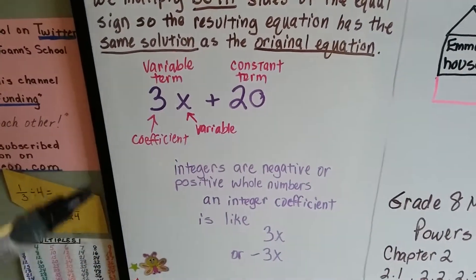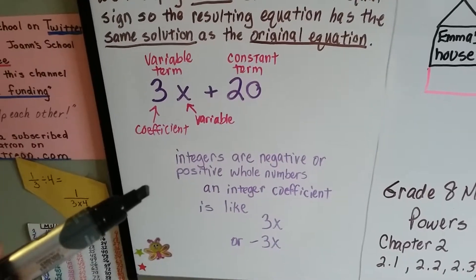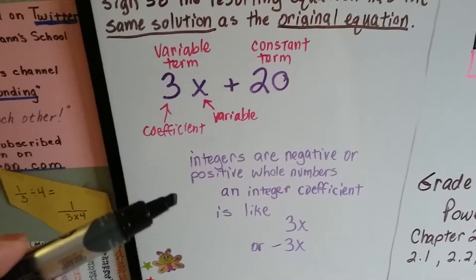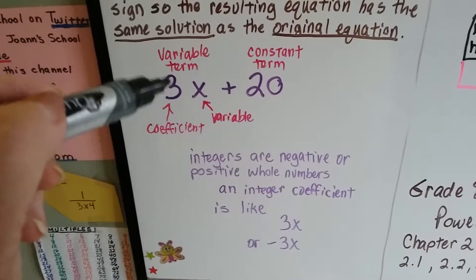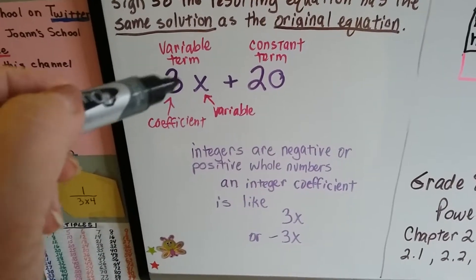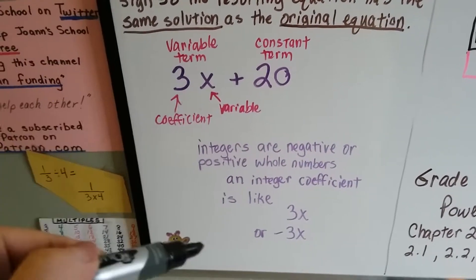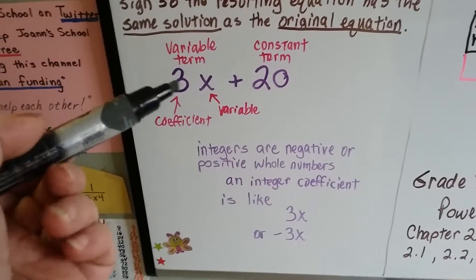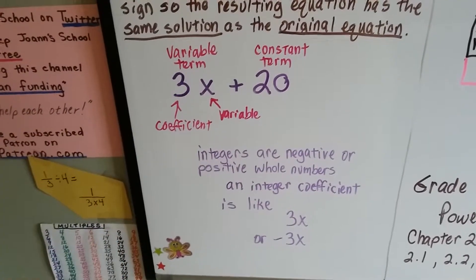And integers, I don't know if you remember from last year, but they're negative or positive whole numbers. And an integer coefficient is a negative or positive coefficient that is right in front of the variable here. So it would be like a positive 3x or a negative 3x.